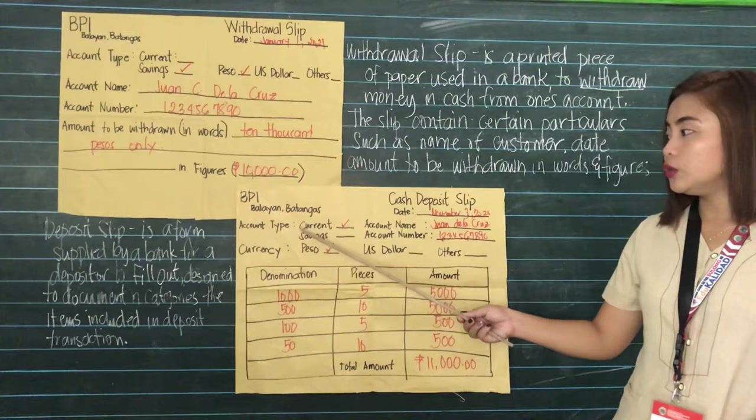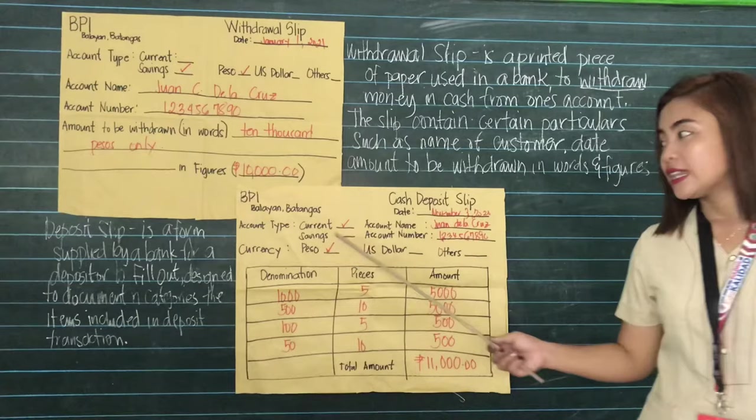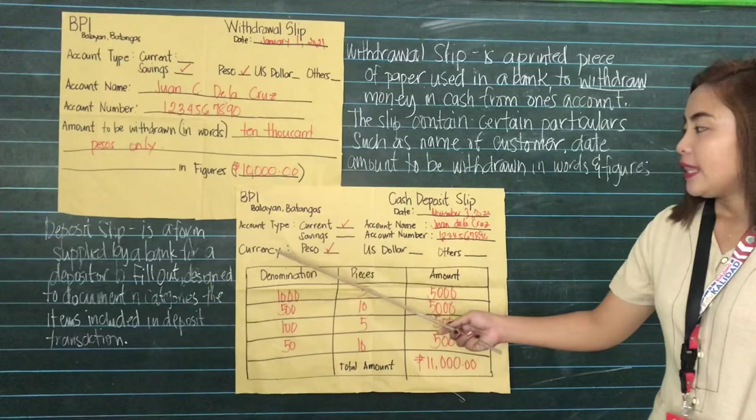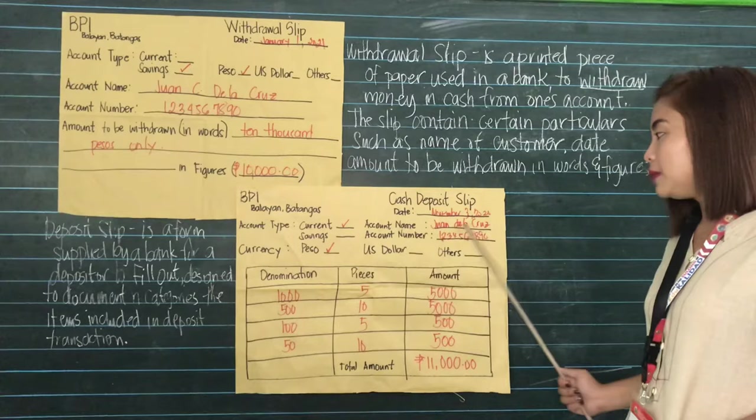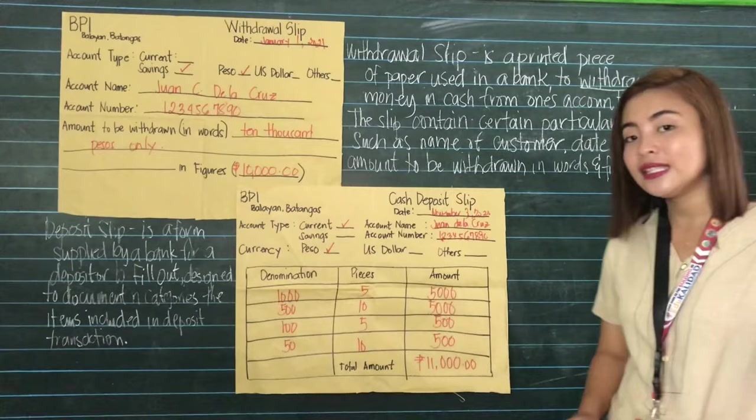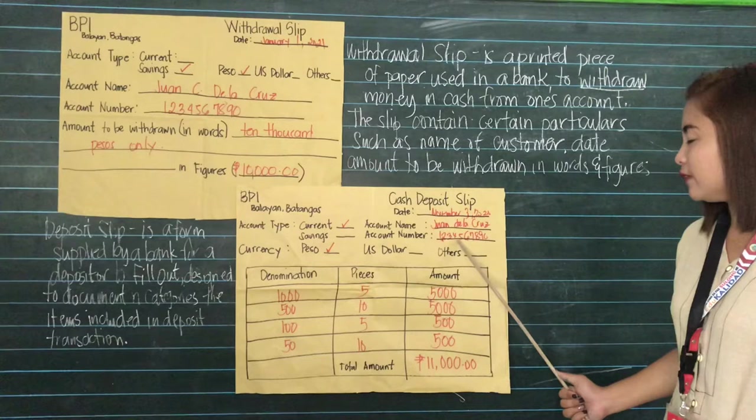There are two types of accounts; you need to select one. I put a check mark on current since that is the account that I am going to deposit money into. Then, account name — you would fill out the account name here. And then the account number, which is usually a 10-digit number for some banks, so I put here 1234567890.